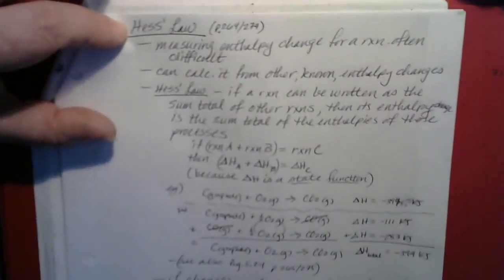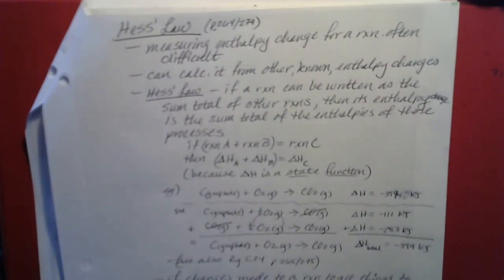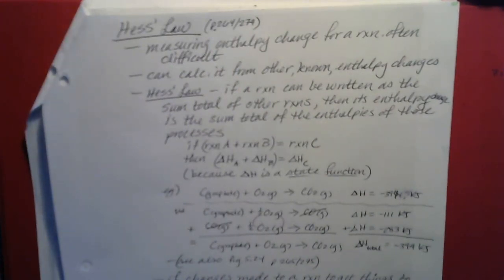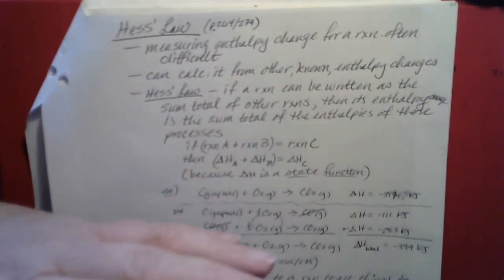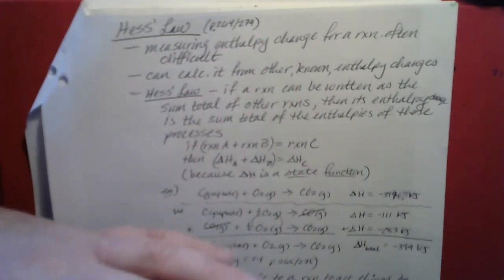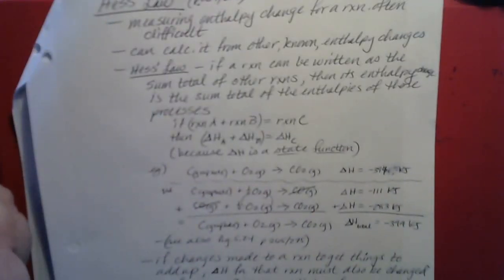That brings us to Hess's law, which is a very useful concept involving enthalpy values. The idea is that you don't necessarily have to measure the enthalpy of the reaction you're actually interested in. If you can get enthalpies for a bunch of other reactions and manipulate them so they algebraically add up to the reaction you're interested in, you can do the same to their delta H values and get the delta H for your target reaction. We'll see that in detail in the next segment.